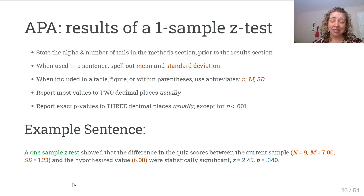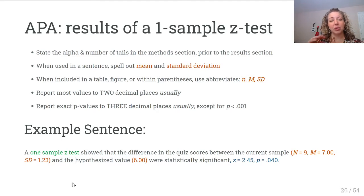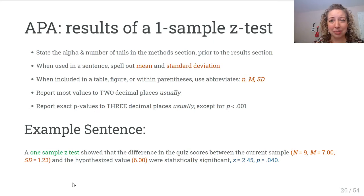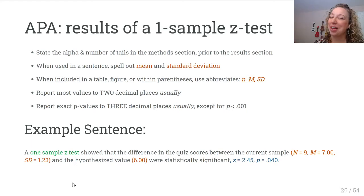At the end of the sentence is where we put our test statistic and p-value — not in parentheses, just separated with a comma. The Z and the P are italicized. Notice all values use two decimal places, except sample size which should be a whole number, and the p-value which uses three decimal places.